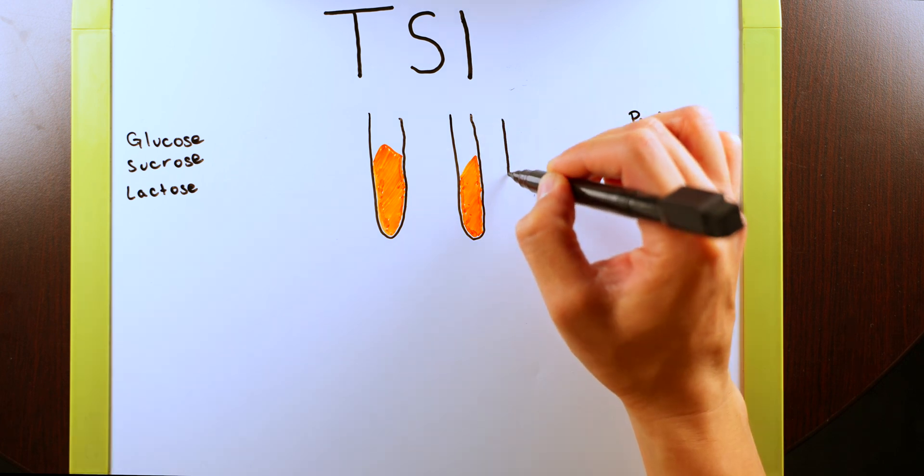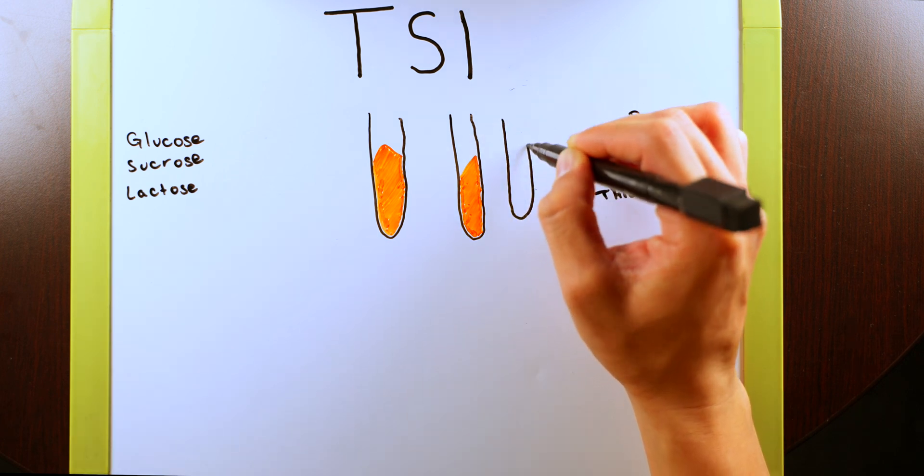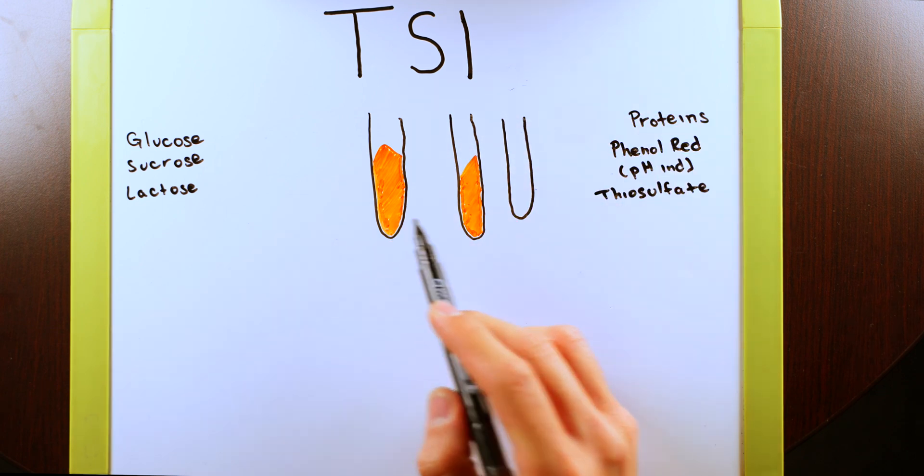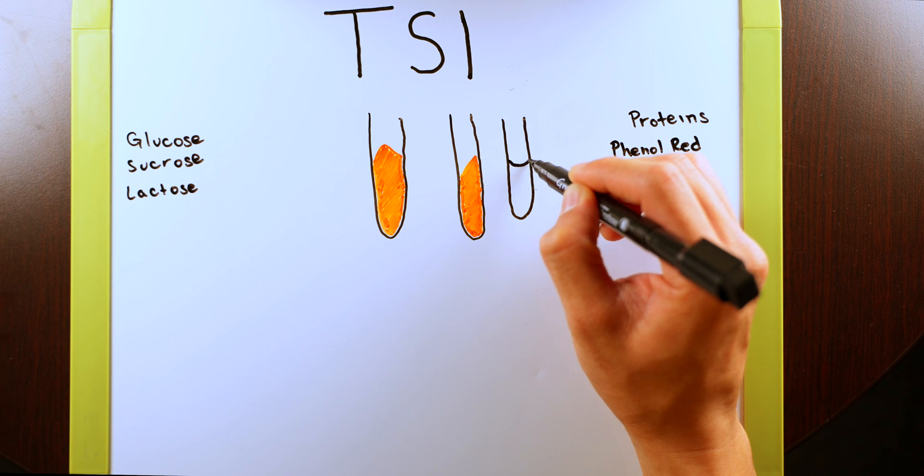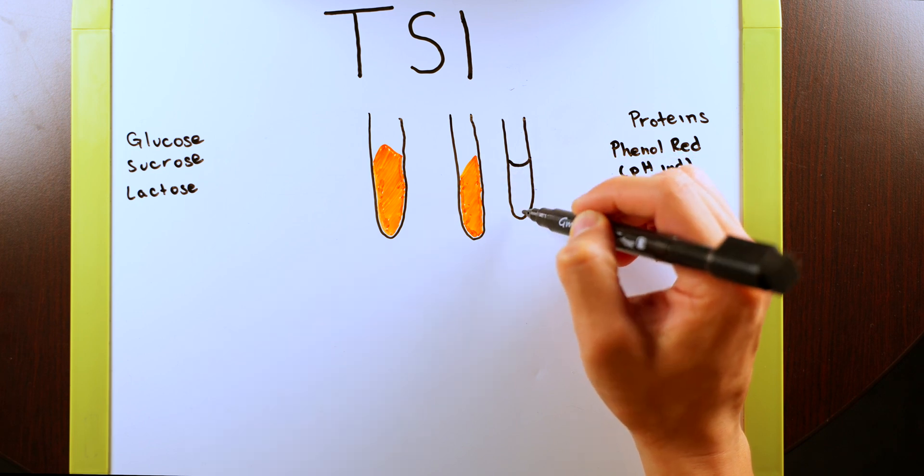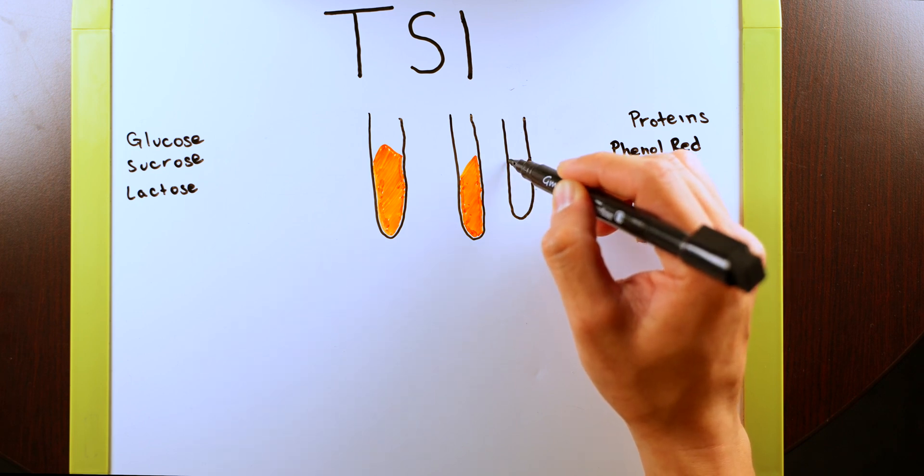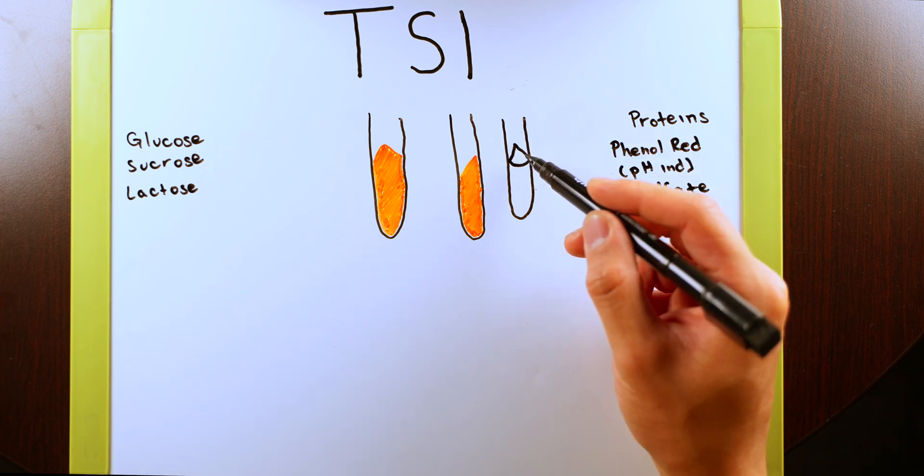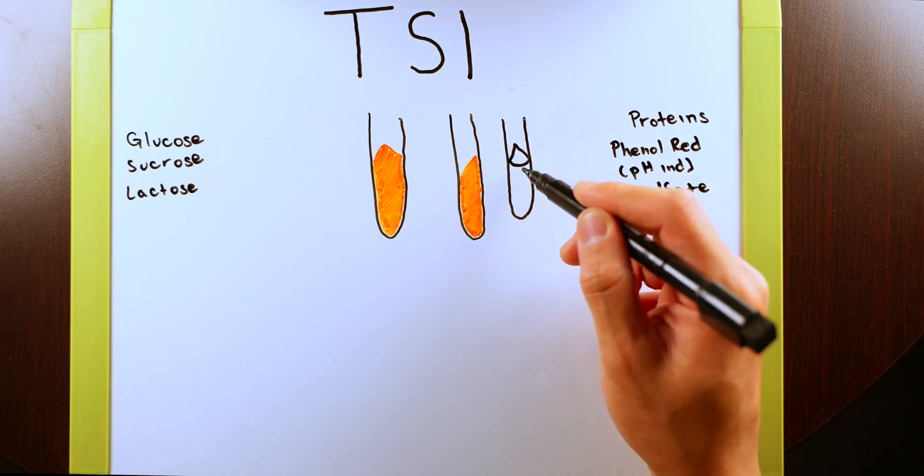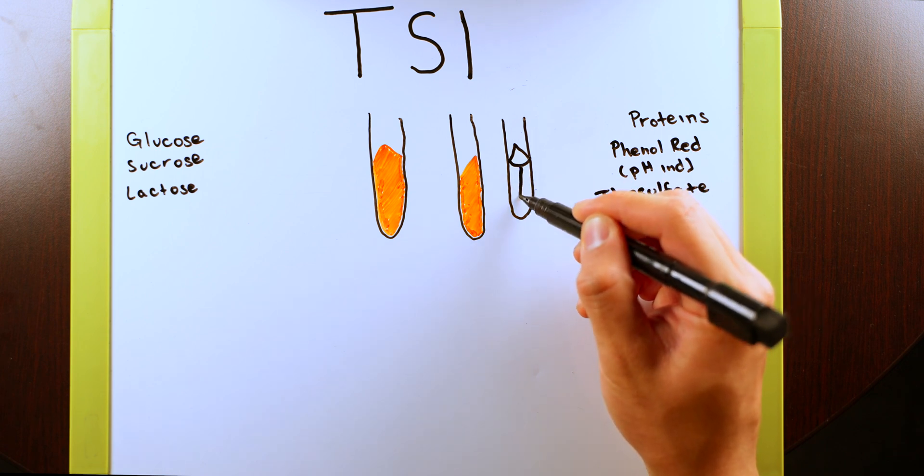So if you can imagine when you get your test tube, I'm trying to draw it in two different dimensions here, one straight on and one as a side profile. If you imagine that we have a solid agar from this portion down, and then from the bottom portion to the top portion of the cone here, this is only partially filled. And what we want to do here is on the solid portion, the butt portion of it, we want to stab the media.